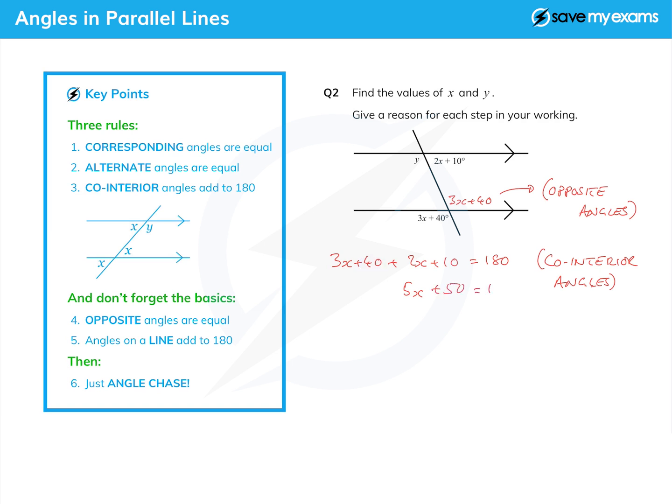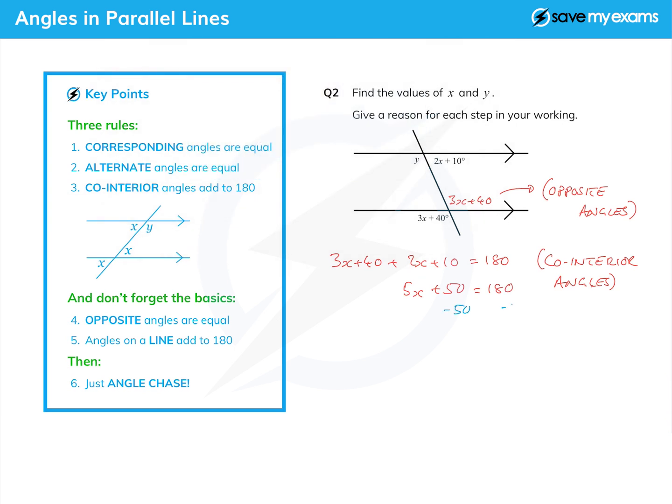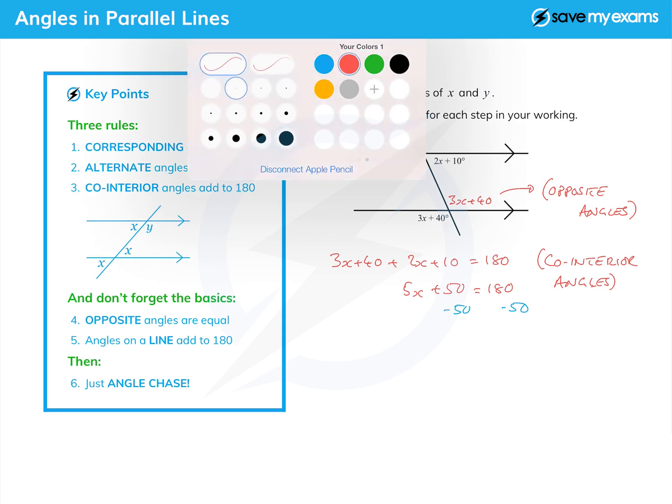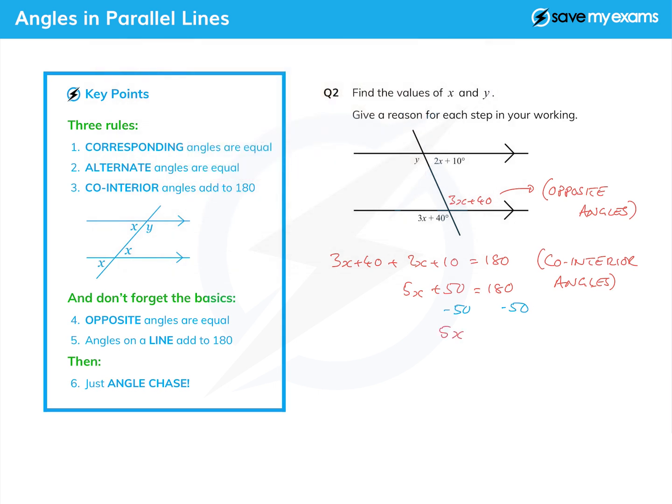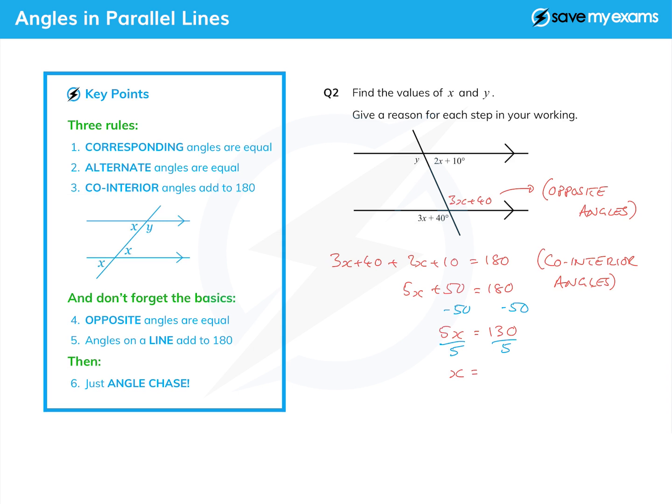And then we just solve that in the normal way. Subtract 50 from both sides, which gives me 5x equals 130. And divide both sides by 5 to give me x on the left is 130 over 5, which is 26 degrees. Or 26—I don't really need the degrees because it's just a letter I'm trying to find.